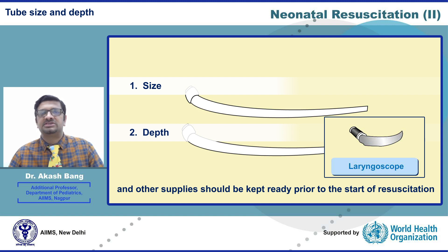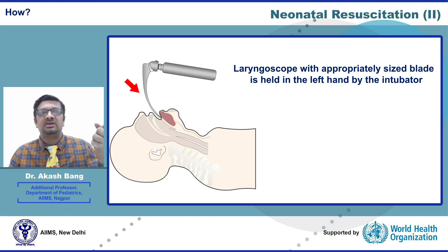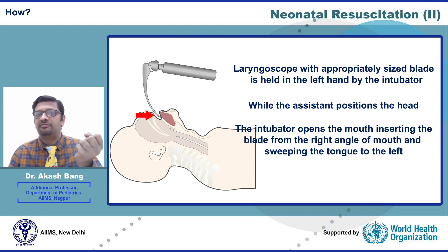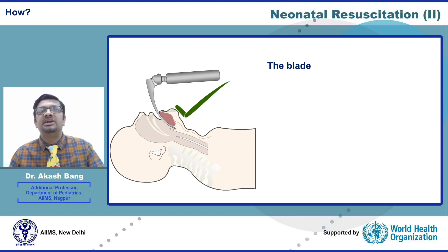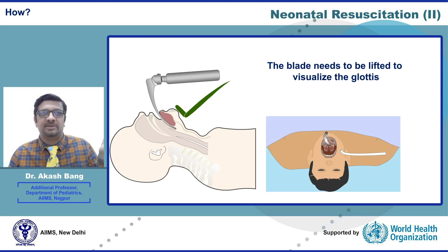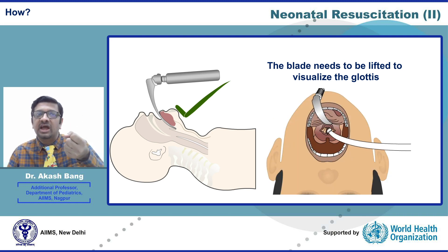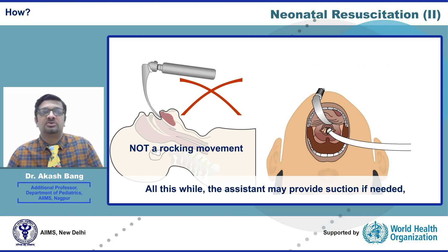Appropriate-sized endotracheal tubes, laryngoscope with blades, and other supplies should be kept ready prior to resuscitation. The laryngoscope with appropriately sized blade is held in the left hand by the intubator. While the assistant positions the head, the intubator opens the mouth, inserts the blade from the right angle of the mouth, sweeps the tongue to the left, and advances the blade to the tongue base. The blade is then lifted to visualize the glottis — this is the most important step. The lifting movement must not be a rocking movement. Visualization of the glottis is the most important prerequisite for successful intubation.